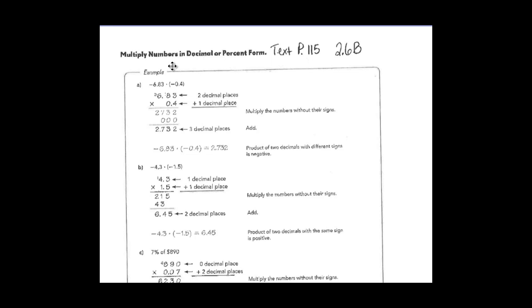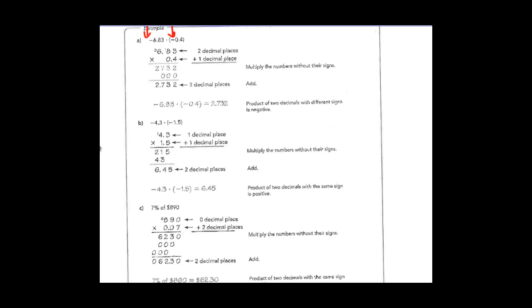Today we're going to work with operations with rationals, section 2.6 in the textbook on page 115, and in your packets we're on page 17. This is about multiplying and dividing decimals. This is a review of some material that you should know. The only new piece is we're going to be adding some integer symbols to our rational numbers — negative decimals in a product and negative decimals in a quotient.